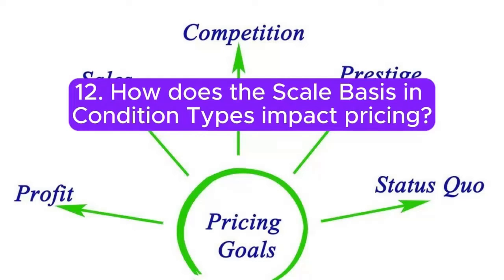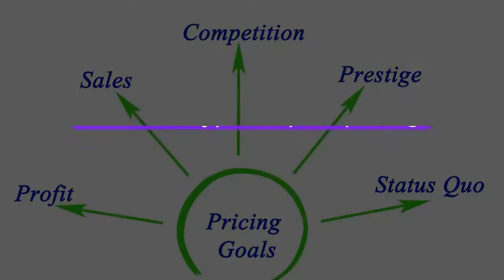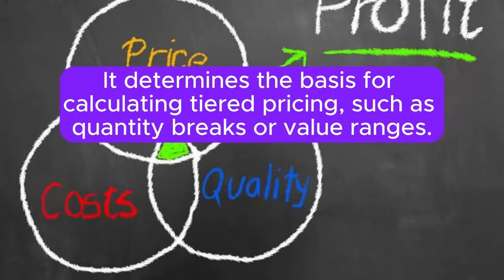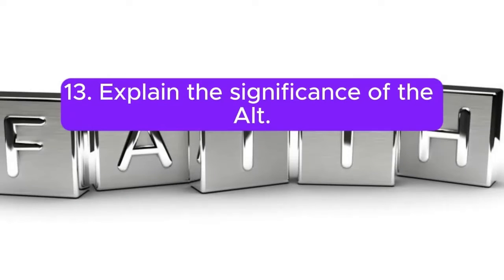Question 12: How does the scale basis in condition types impact pricing? Answer: The scale basis in condition types defines the quantity or value on which the price scale is applied. It determines the basis for calculating tiered pricing, such as quantity breaks or value ranges.